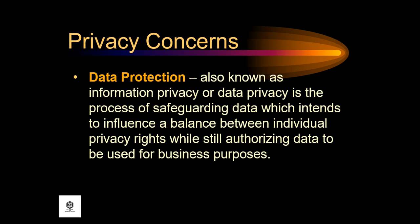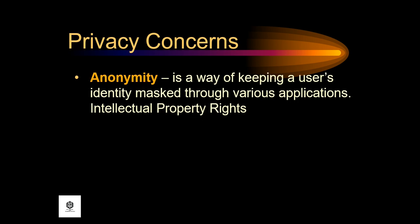Followed by data protection, also known as information privacy or data privacy — the process of safeguarding data which intends to influence a balance between individual privacy rights while still authorizing data to be used for business purposes. Next is anonymity, the way of keeping a user's identity secret through various applications, and intellectual property rights.